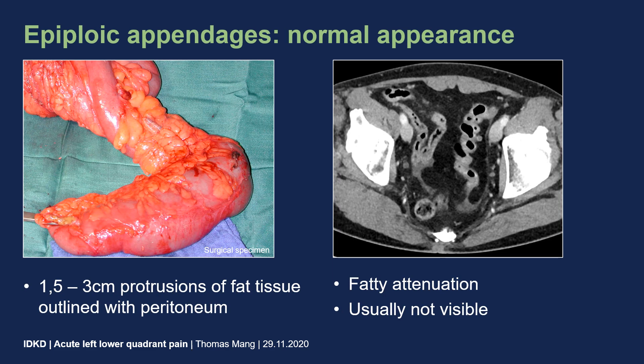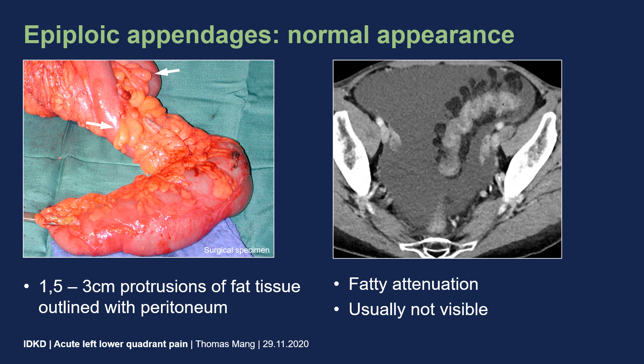Epiploic appendagitis is an inflammatory condition of the epiploic appendages. These are up to 3 cm measuring protrusions of fat tissue on the outer wall of the colon. They are outlined with peritoneum and present with a fatty attenuation on CT scans, but they are usually not visible because they are surrounded and masked by abdominal or pelvic fat tissue. In patients with ascites, however, epiploic appendages can become visible because they are surrounded by intraperitoneal fluid, as shown on this example.